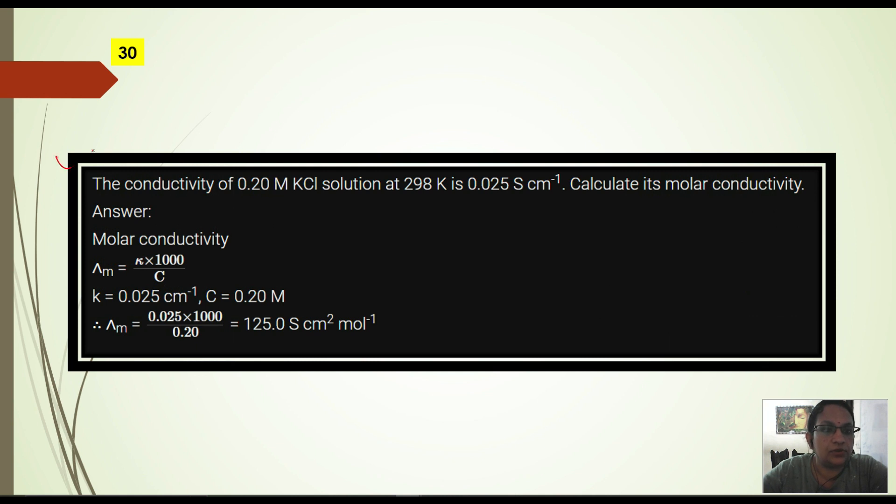Then next question: the conductivity of 0.2 molarity KCl solution at 298 Kelvin is 0.025 siemens per centimeter. Calculate its molar conductivity. Molar conductivity formula you know: molar conductivity is equal to K into 1000 by C. K value you're given 0.025. C value concentration value is also given. Just put it here and you will get the answer.